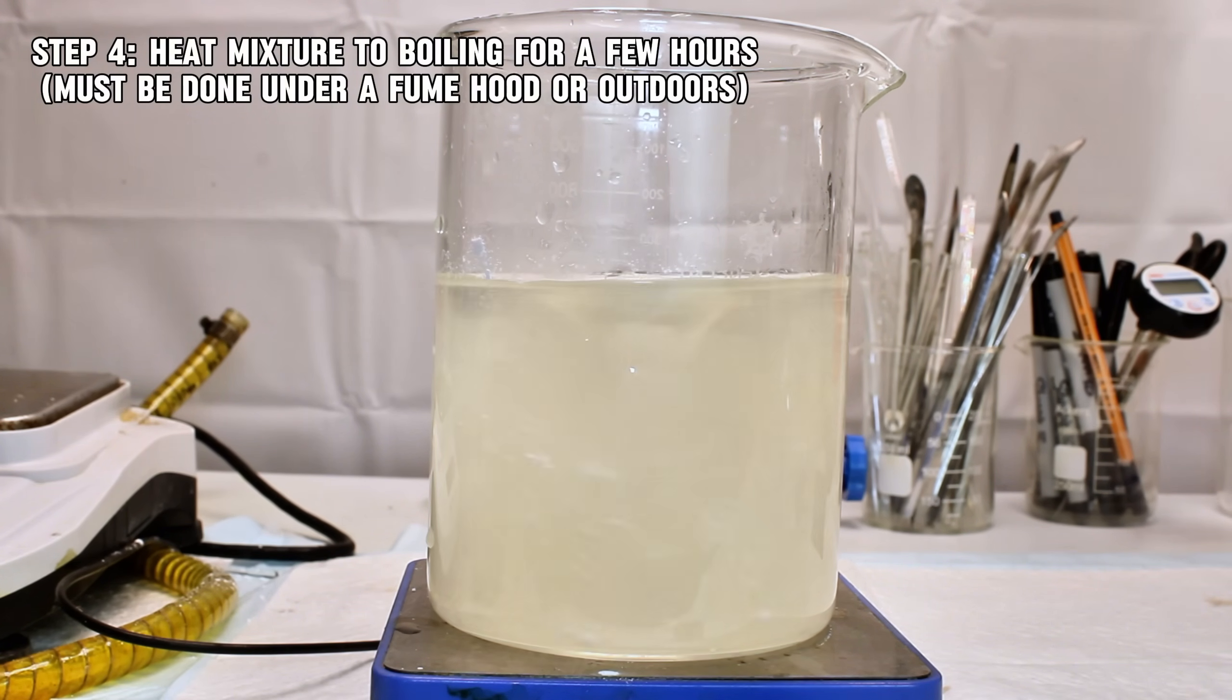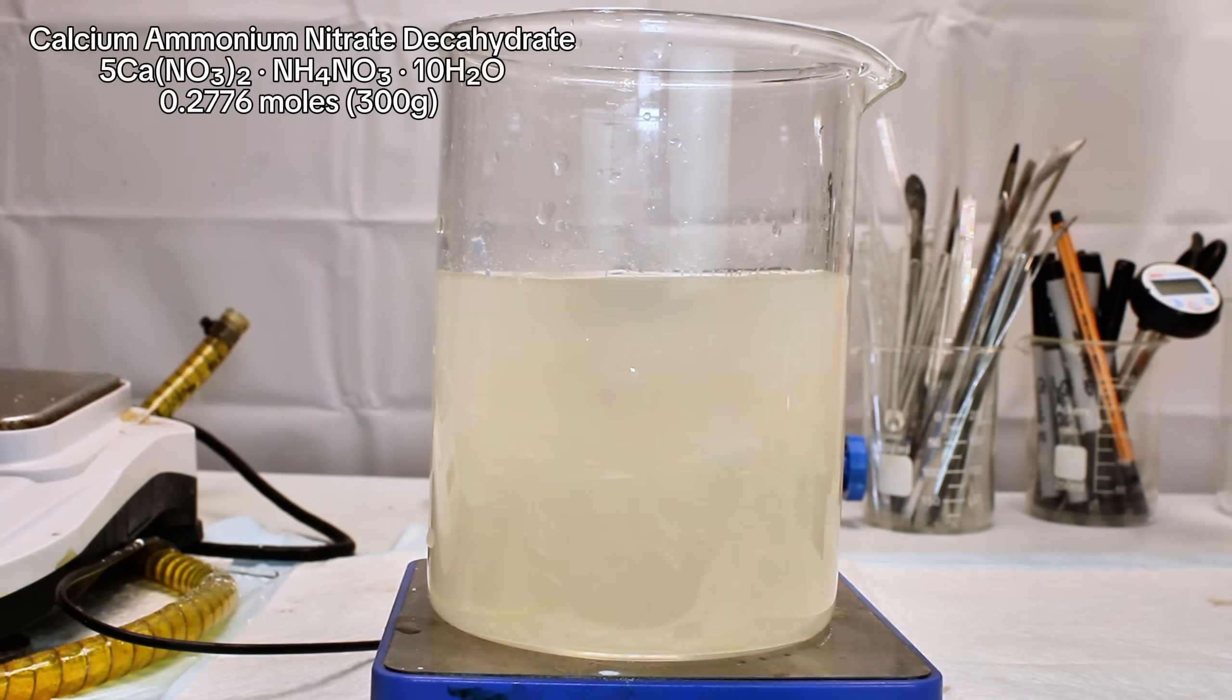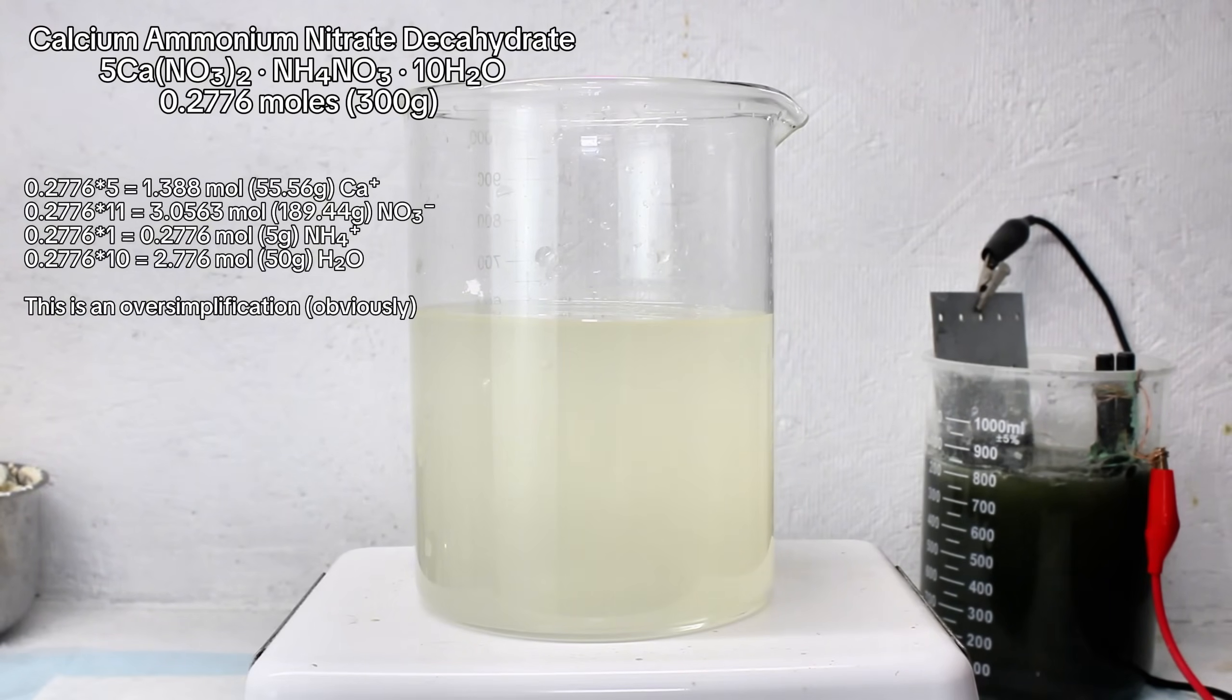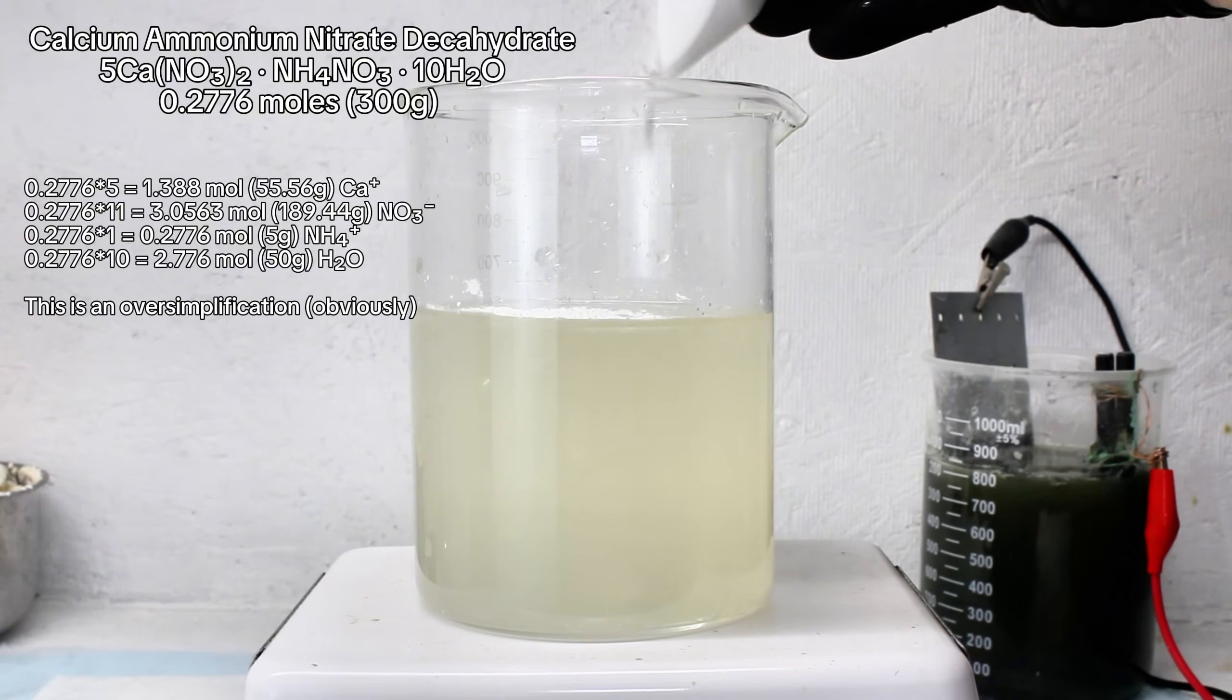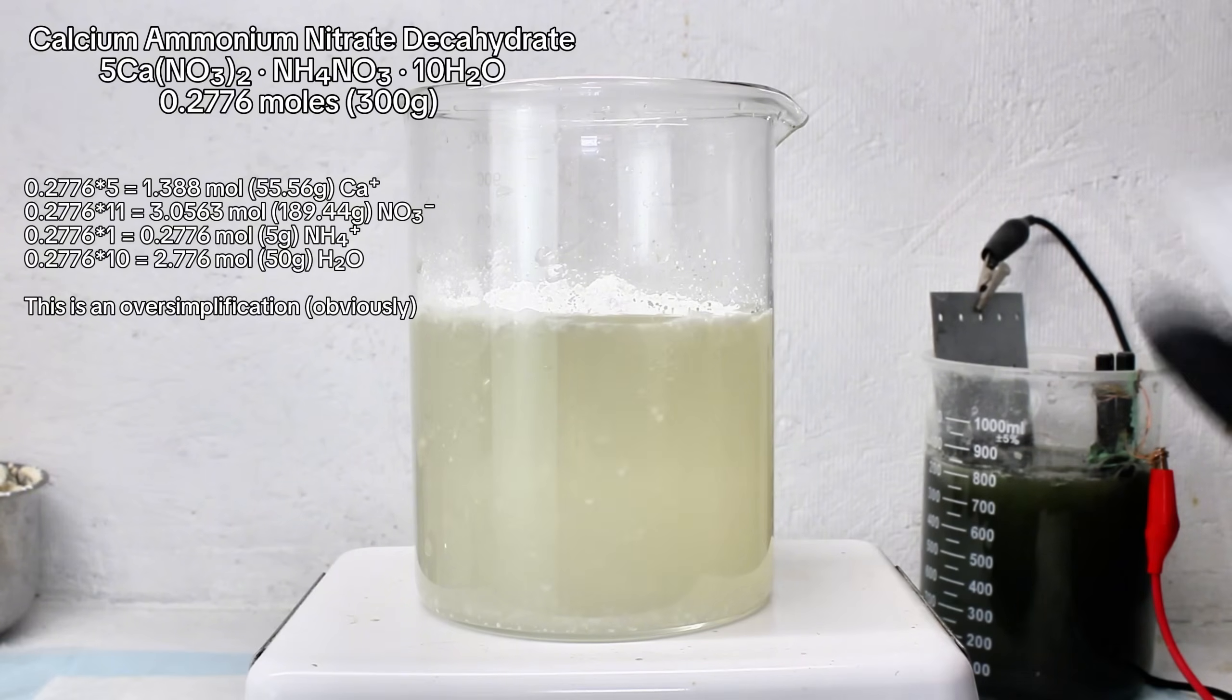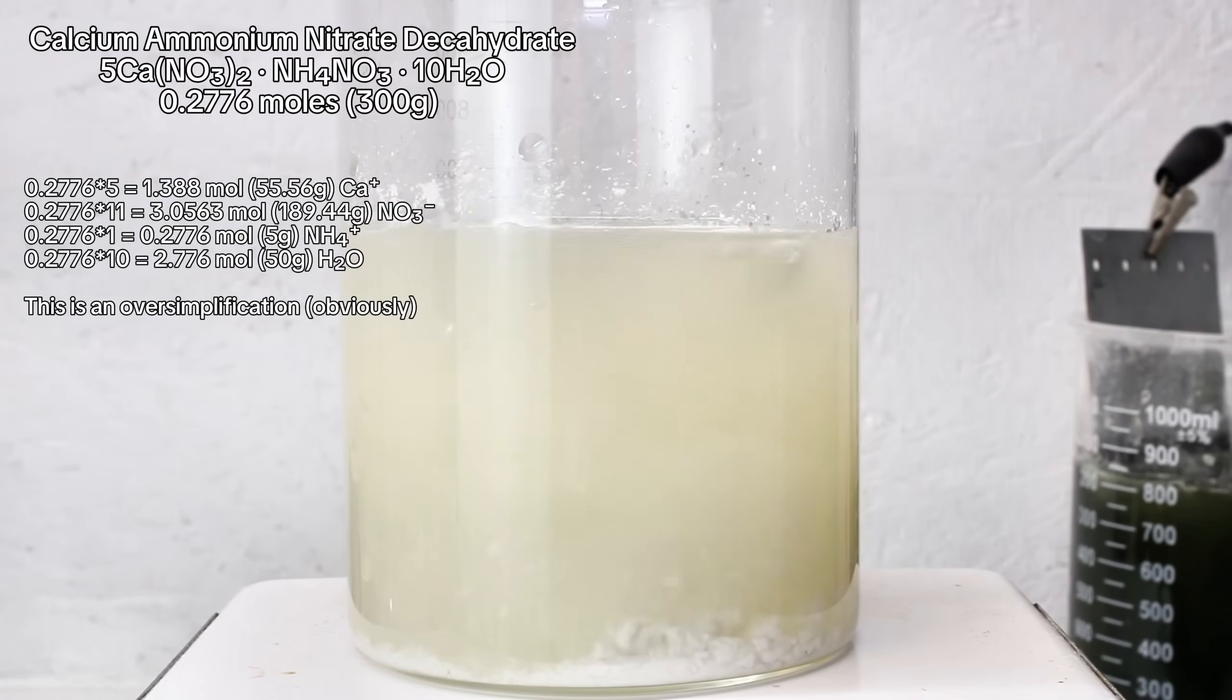What's happening now is that when my 300 grams of calcium ammonium nitrate decahydrate dissolves in water, it forms 55.56 grams of calcium ions, 189.44 grams of nitrate ions, 5 grams of ammonium ions, and 50 grams of water molecules. The ammonium is what we're trying to get rid of here, and the 5 grams represents 0.278 moles, which is equal to the number of moles of CAN I started with.